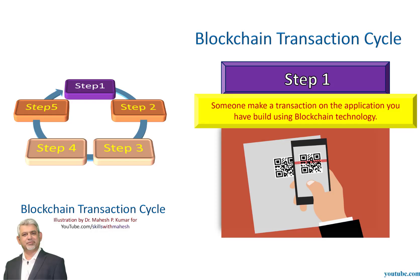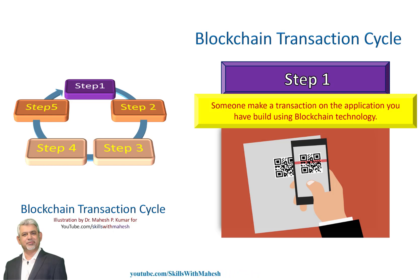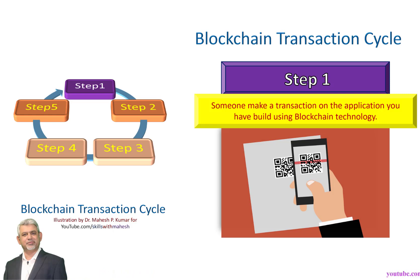Step 1: Someone makes a transaction. The blockchain cycle starts when someone makes a transaction on the application that you or some expert programmers have built using blockchain technology. Let us take an example: a client purchases a ticket from an event organizer or ticket seller. The application is installed on the cell phones of both seller and buyer, and this app serves as a user interface, so the seller scans the buyer's address to transfer the ticket.